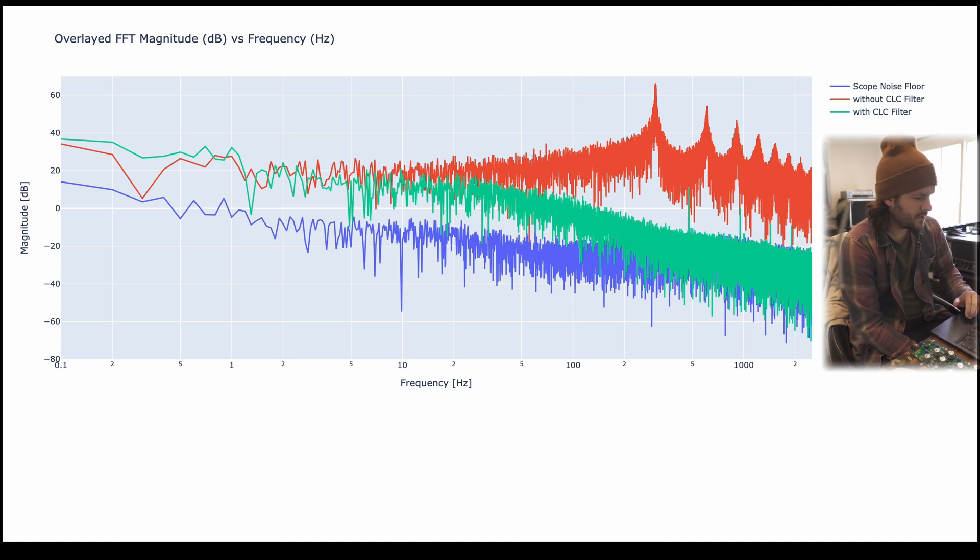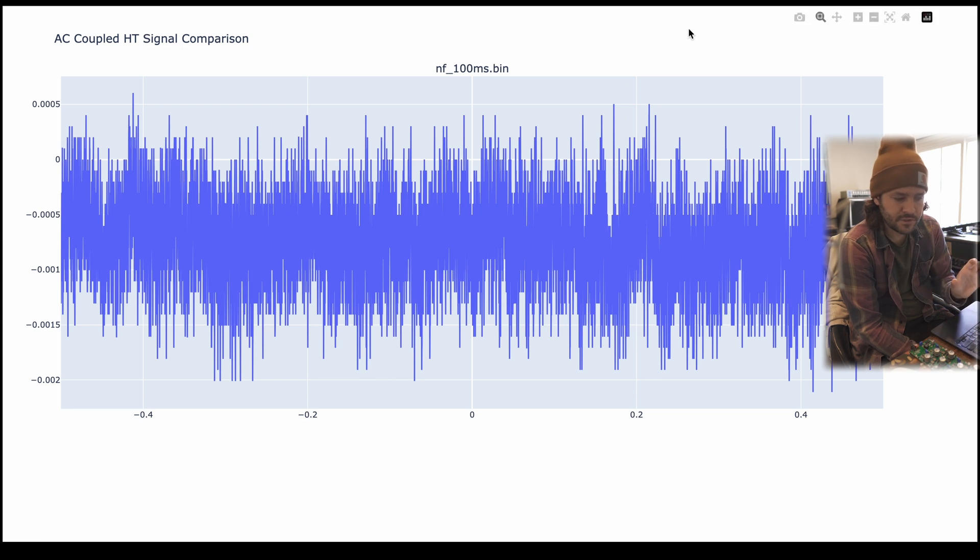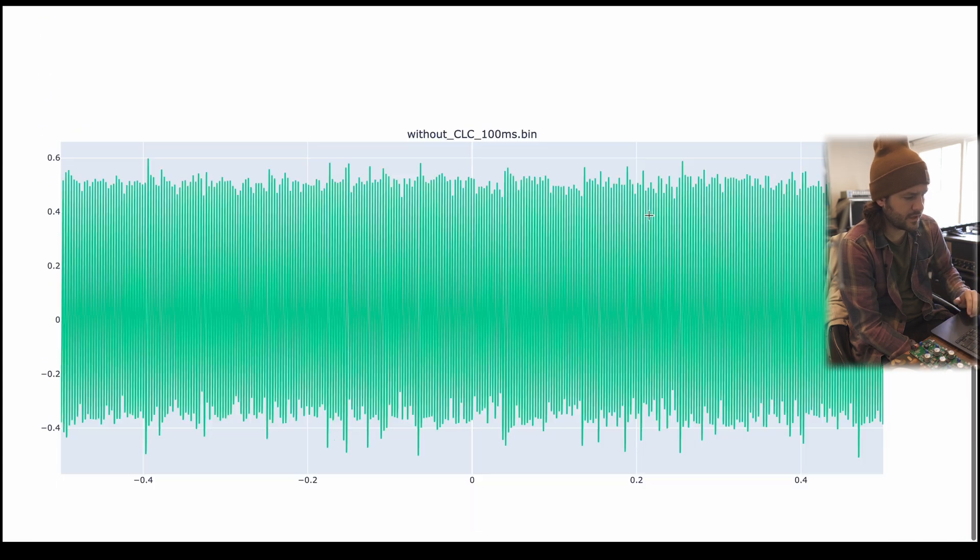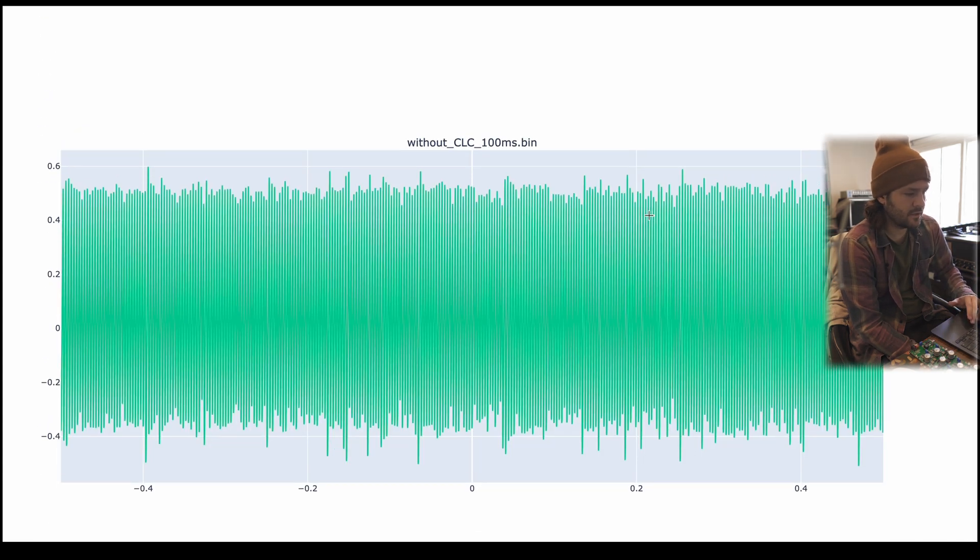Another way to look at this is to just capture those time signals at different divisions so that we have different scope sampling and we can see a different FFT. In this case I'm doing the same thing but at 100ms divisions. There's our noise floor, there's with the filter, and there's without the filter again.